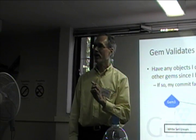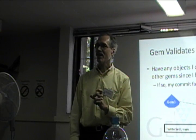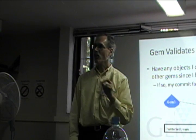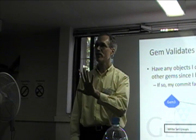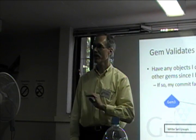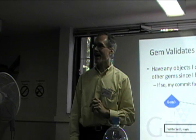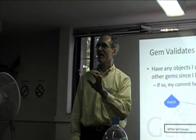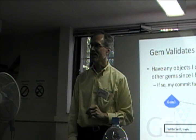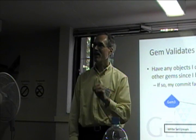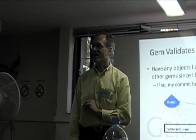One model for pessimistic concurrency is: acquire the lock at the time that you present the current state to the user, and then if they edit it, you'll know you succeed. But if they don't edit it, throw away the lock.